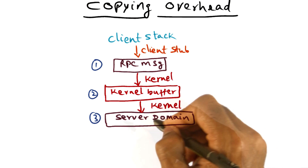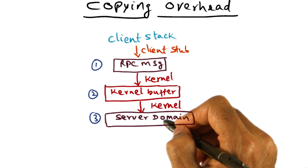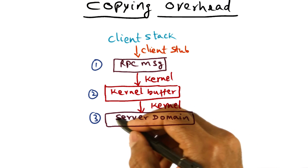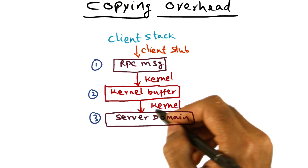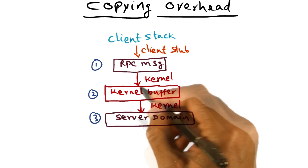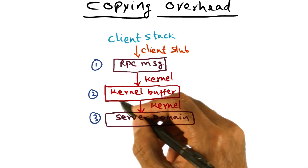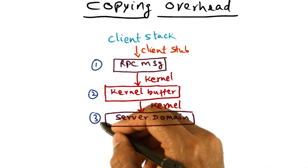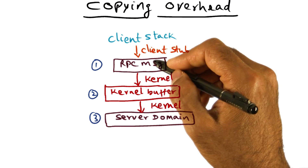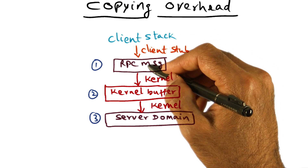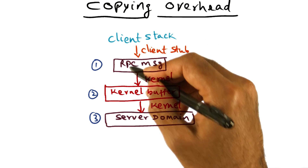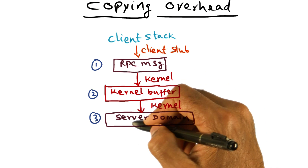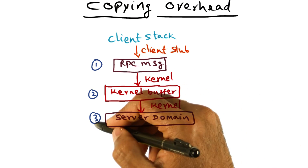Next, the kernel schedules the server in the server domain, because the server has to execute this procedure. Once the server has been scheduled, the kernel copies the buffer — it has all the arguments packaged in — into the server domain. That is the third copy. So we went from the client stack to the RPC message (first copy), from the RPC message to the kernel buffer (second copy), and now the kernel buffer is passed out to the server domain (third copy).